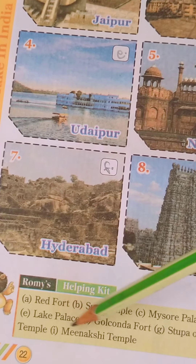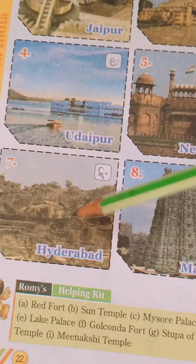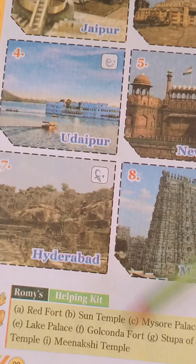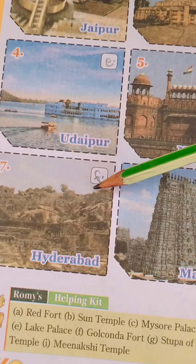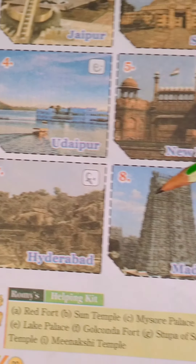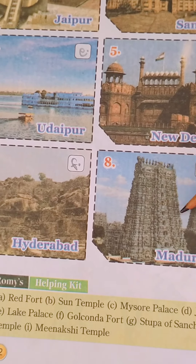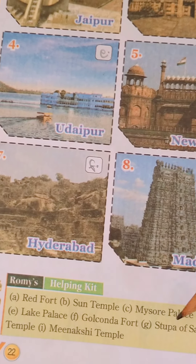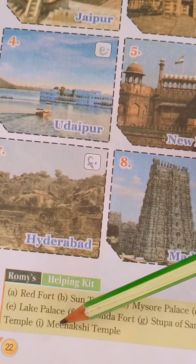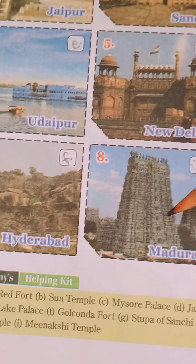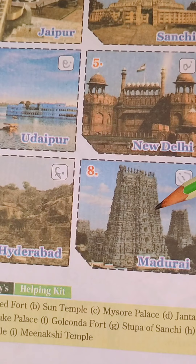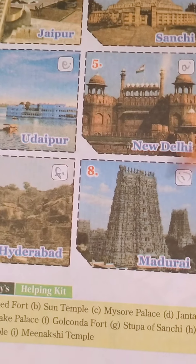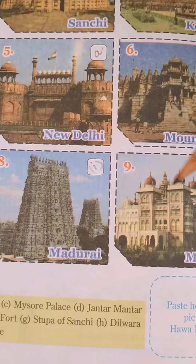This is Golconda Fort. This is the answer F here. Number 8, Madurai — Meenakshi Temple. This is the famous monument in Madurai, Meenakshi Temple. Number 9.